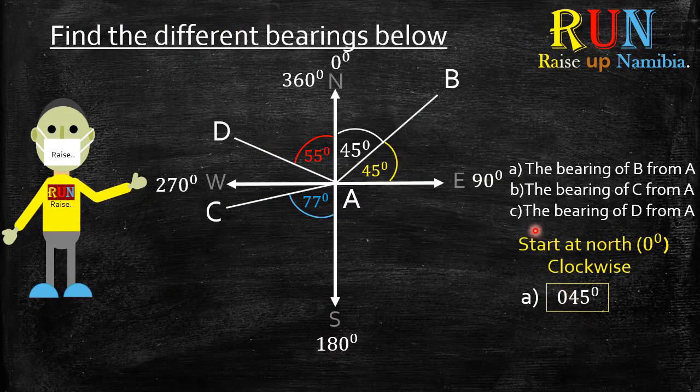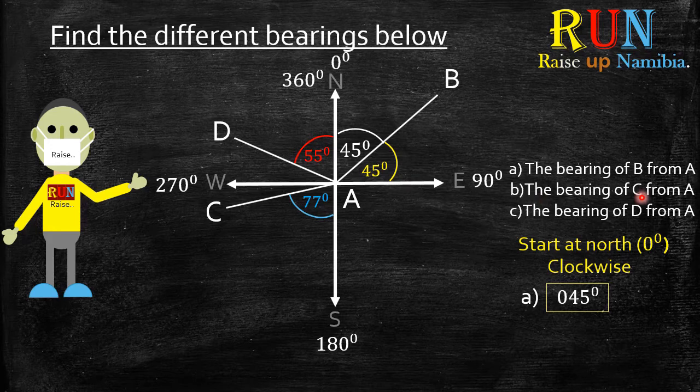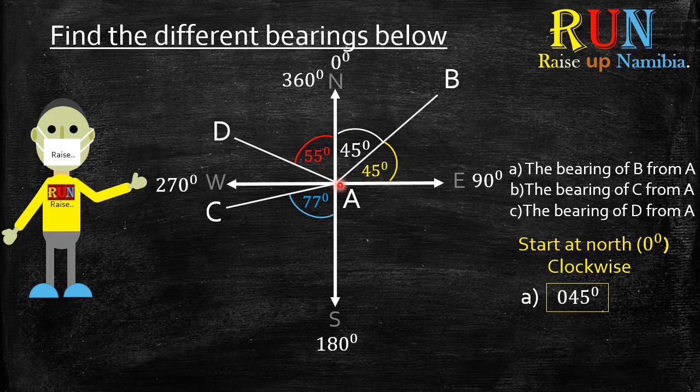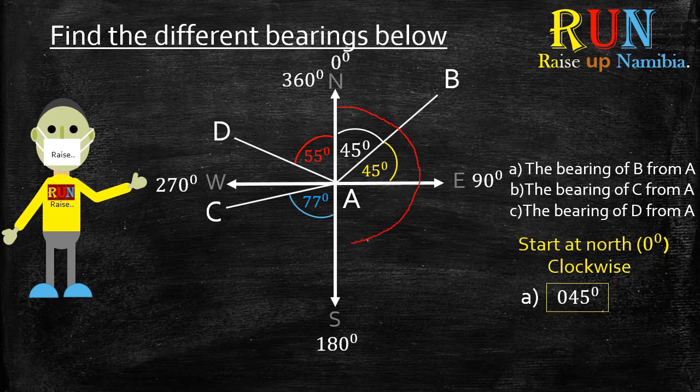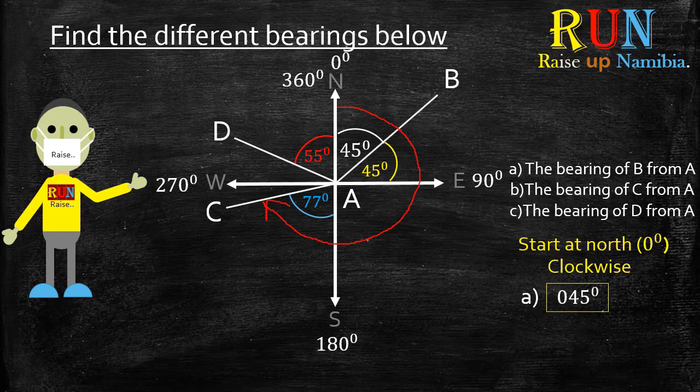Let's take a look at B. B says the bearing of C from A. So we know A is in the center. But where is C? C is here. So we always start at the north. Now if you are starting from the north, we move towards the C that we are looking for. Here is the C. So meaning it's there.